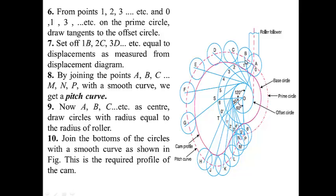From point 1, we mark point B such that the length 1B is the same as given in the displacement curve. Similarly, from point 2 we obtain C, from 3 point D, from 4 point E, from 5 point F, and in the same way we obtain points G, H, J, K, L, M, and P. If we join these points with a smooth curve we obtain the pitch curve. Then, with all points A through P as centers and the roller radius as radius, we draw different small circles, and draw a smooth curve touching the inner part of all circles to obtain the cam profile in the case of an offset follower.